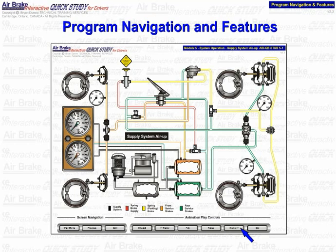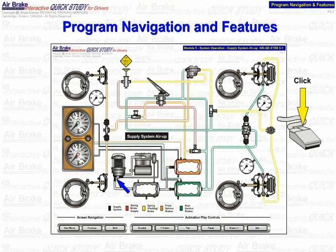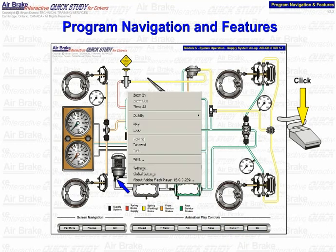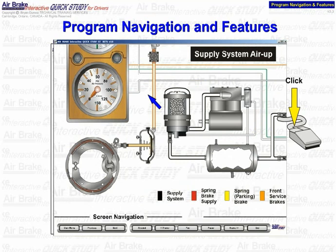The air system animations in this program contain a tremendous amount of detail, which you can view up close whenever you wish. You can zoom in and out on any point on any animation by positioning your mouse cursor over the area you want to view and clicking the right mouse button. A drop-down menu will appear. Click Zoom In for a closer look.